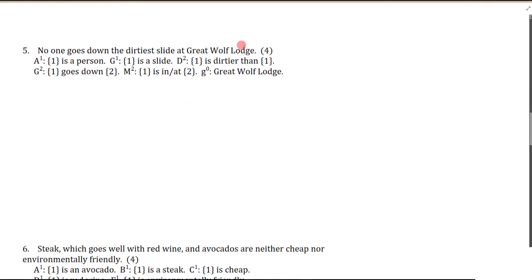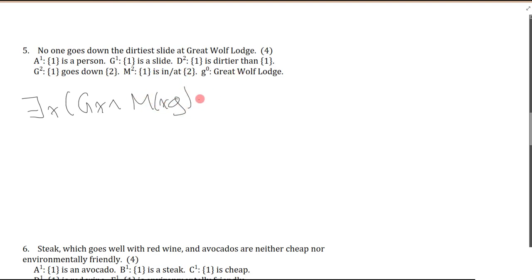Question five: No one goes down the dirtiest slide at Great Wolf Lodge. This is trickier — it's a superlative without a name being invoked, possibly the first time we've seen one of these. I need to define what this slide is. There is something that is a slide and it's at Great Wolf Lodge — X is in G — and I keep the scope open because I'll be talking about X throughout.